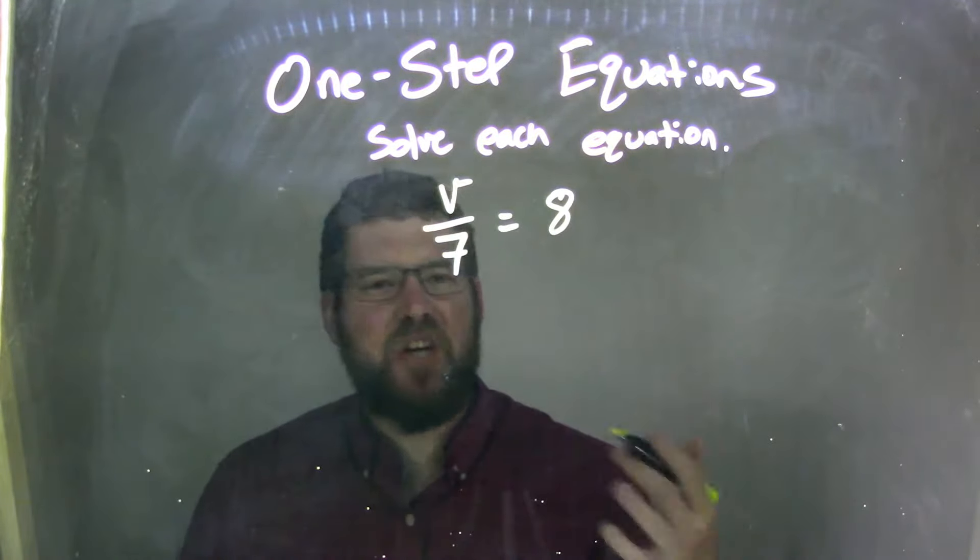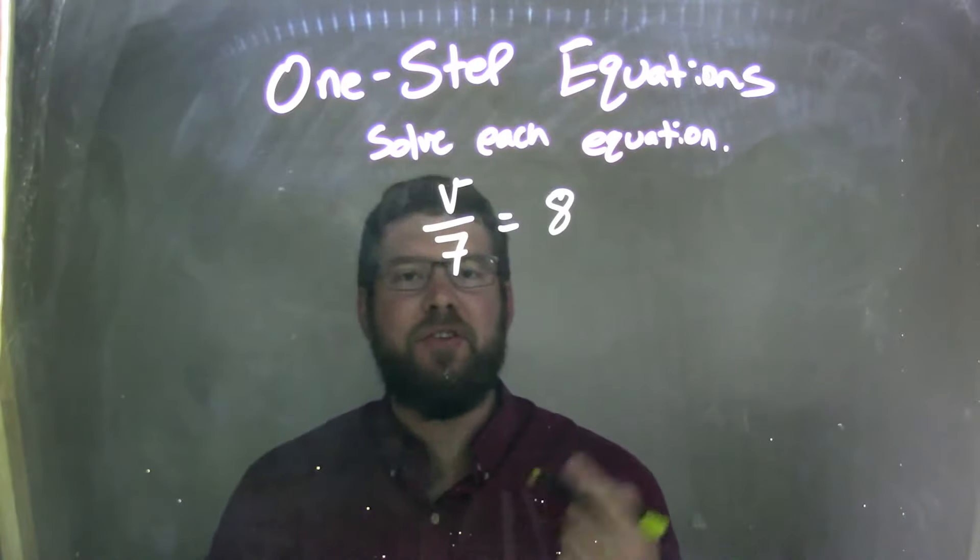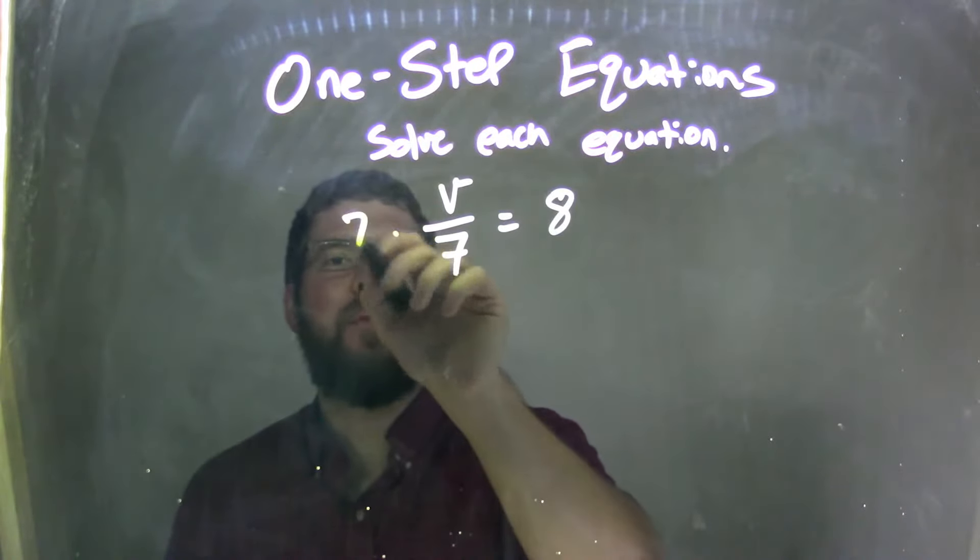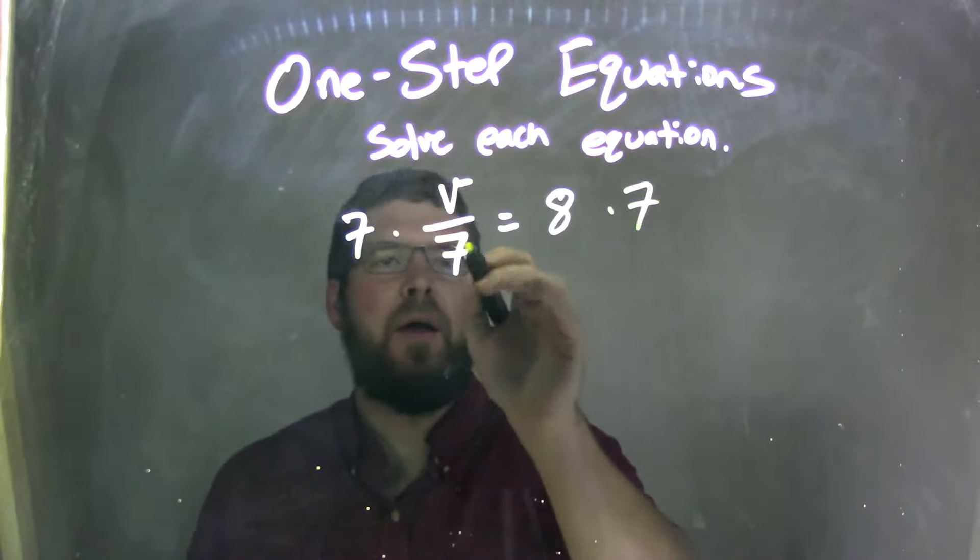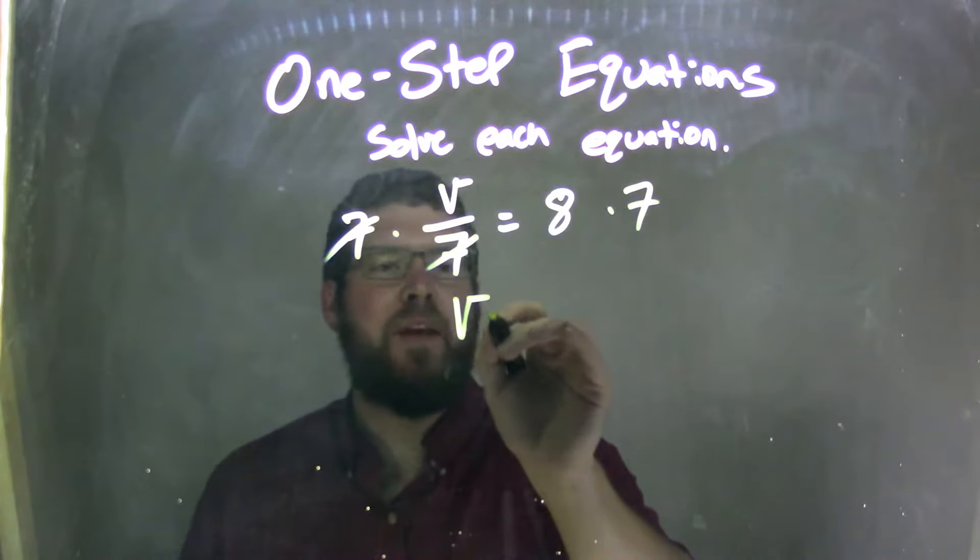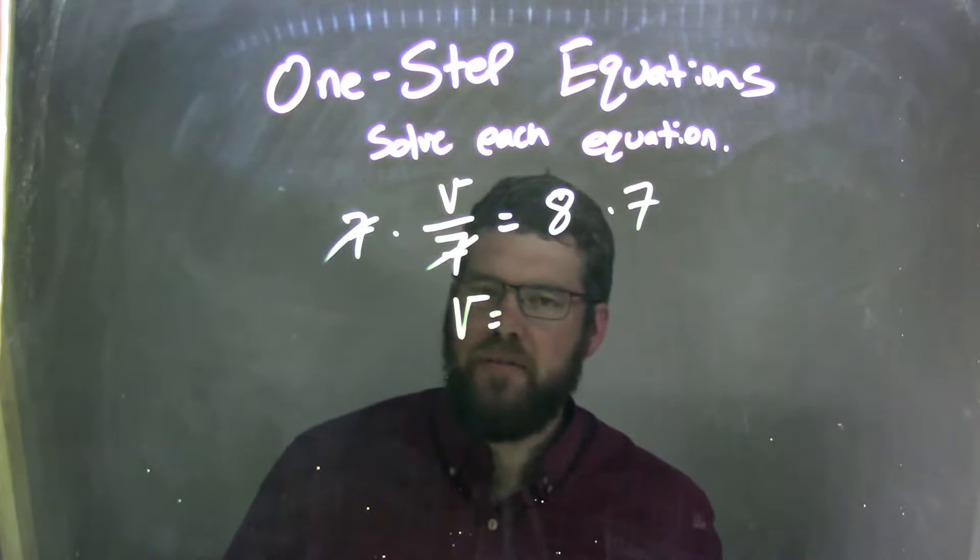V over 7 is just division. Opposite of division is multiplication. So I'm going to multiply both sides by 7, and this becomes a fairly simple problem. The 7s cancel. I'm left with V on the left here, and what's 8 times 7? 56.